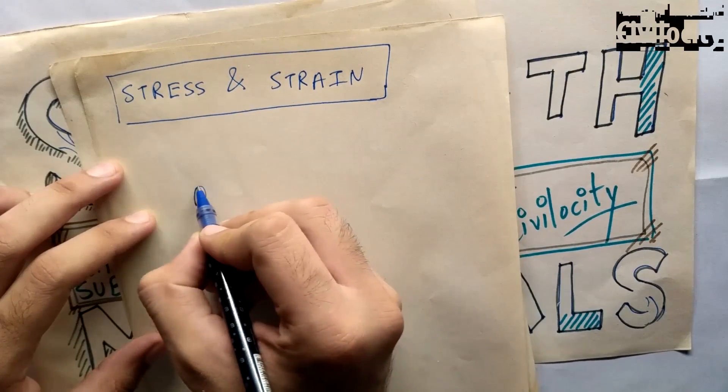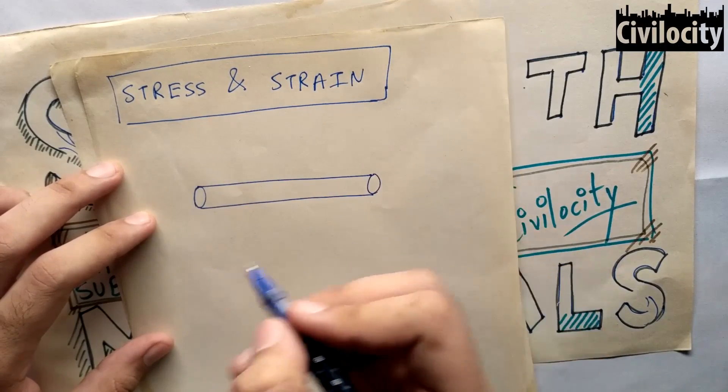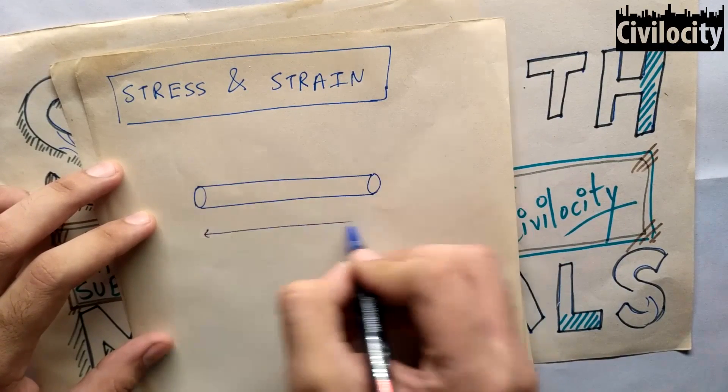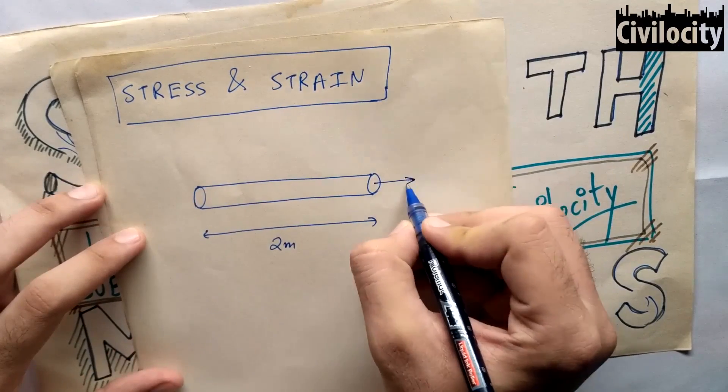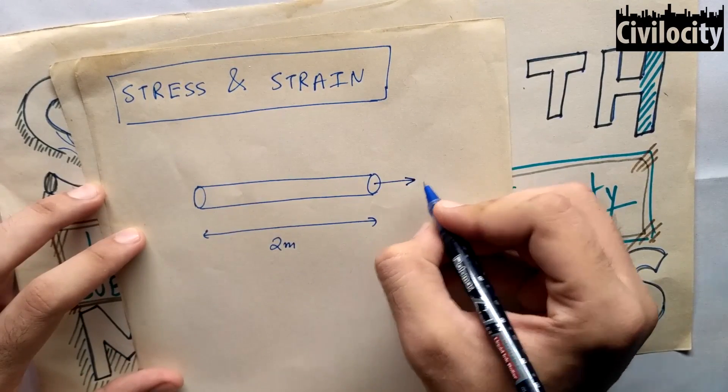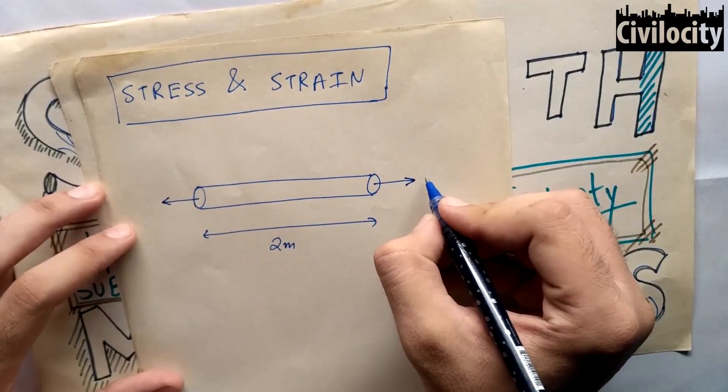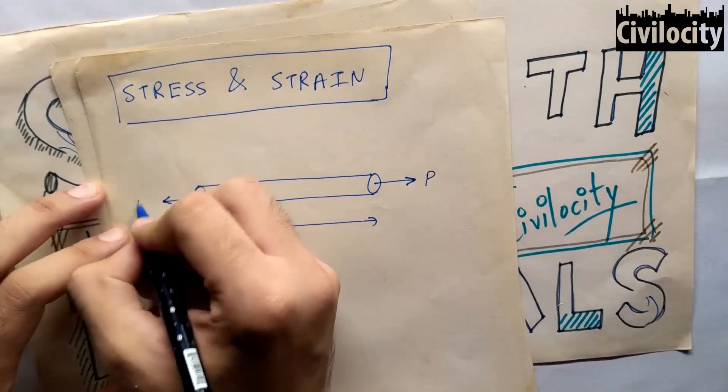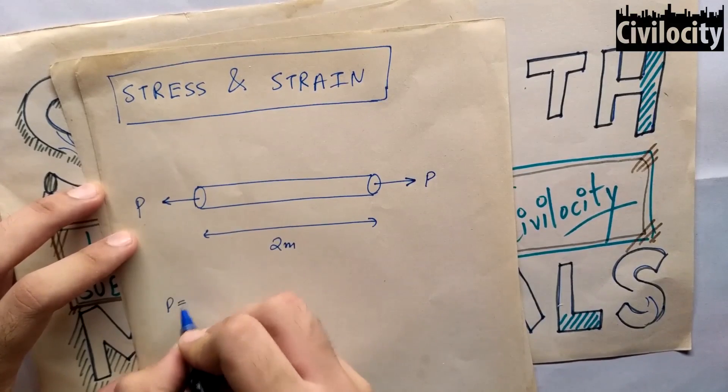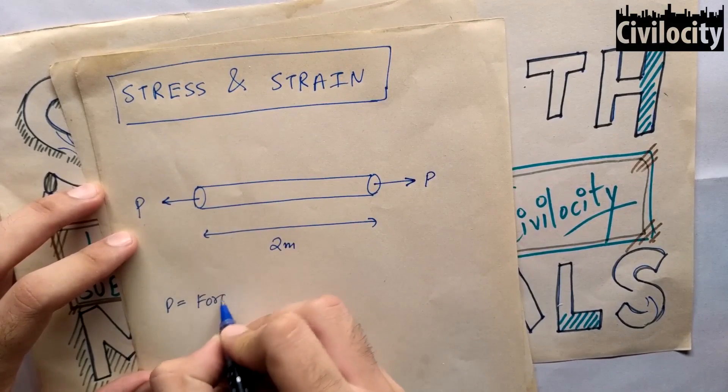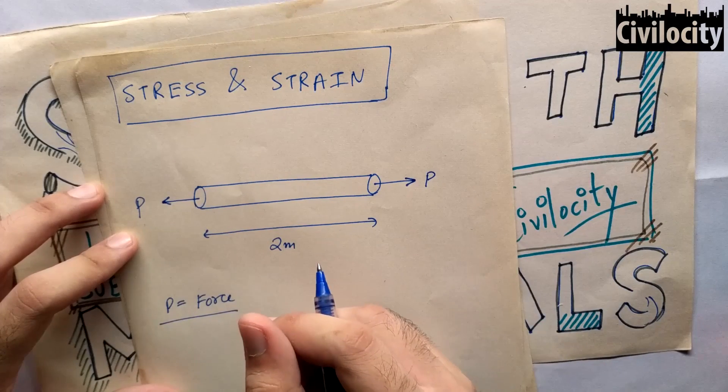Suppose you and your friend are trying to pull a bar away from each other. The bar is circular in cross-section with a certain length, let's say 2 meters. You and your friend are trying to pull it away in a stretching condition, applying the same amount of force. What will happen? The bar will neither move to your side nor to your friend's side, because the force applied is the same on either side.